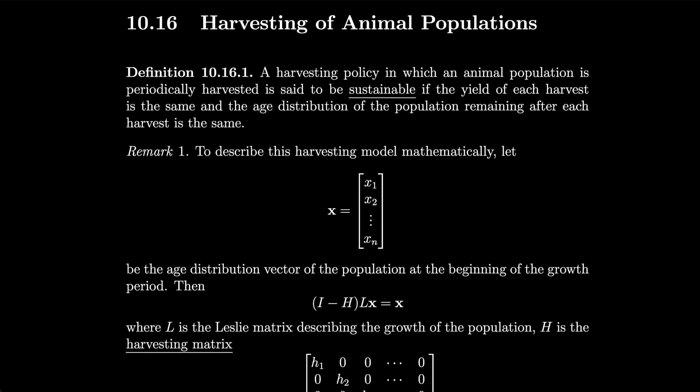What we're going to do in this video is essentially take what we did last time involving Leslie matrices that described population growth and use those to develop policies where we remove animals from the population via harvesting. To describe this harvesting model mathematically, let x be the vector x1 through xn, the age distribution vector of the population at the beginning of the growth period.